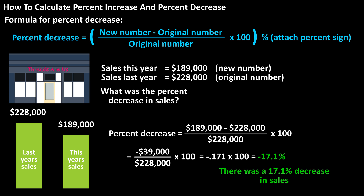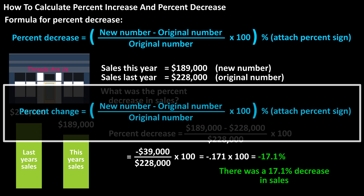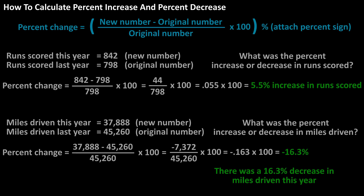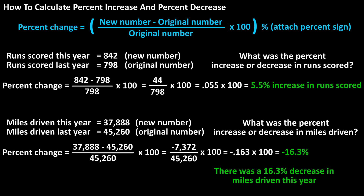It may help to alter the formula to percent change. So it would be: percent change equals the new number minus the original number, divided by the original number, times 100 — and again attach a percent sign. Here are a couple more examples on the screen showing how to calculate percent increase or percent decrease.